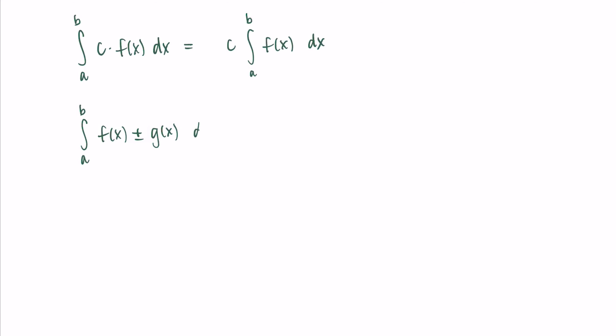Lastly, if we're looking at the integral from a to b of one function plus or minus another function, we can split this up into the integral of each function separately. So this is the integral from a to b of f, plus or minus the integral from a to b of g. If you have a bunch of things inside your integral being added or subtracted, you can split them up into individual integrals. This corresponds to the similar derivative rule where, for a sum or difference of functions, you can take individual derivatives and then add or subtract them. Basically, these properties tell you that integrals work the way you want them to.